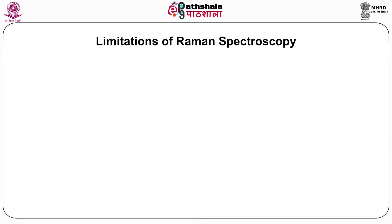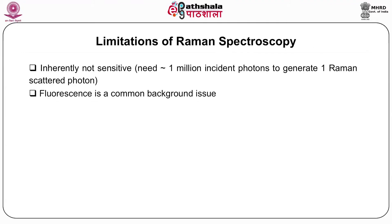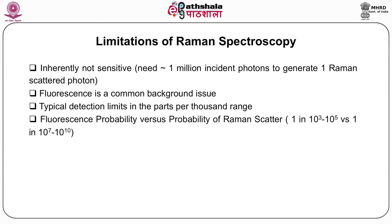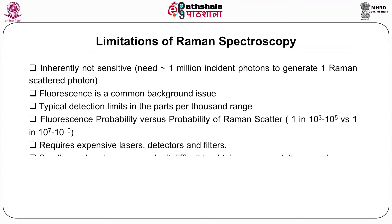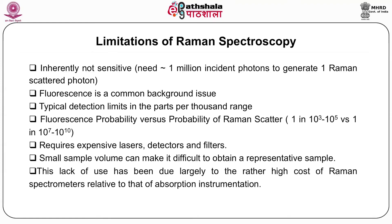Limitations of Raman spectroscopy: it is inherently non-sensitive, needing around 1 million incident photons to generate one Raman-scattered photon. Fluorescence is a common background issue, with typical detection limits in the parts per thousand. Fluorescence polarizability versus Raman scattering is 1 in 10^3 to 10^5 versus 1 in 10^7 to 10^8. It requires expensive laser detectors and filters. A small sample volume can make it difficult to obtain a representative sample, and the high cost of Raman spectrometers relative to absorption instrumentation has limited its widespread use.